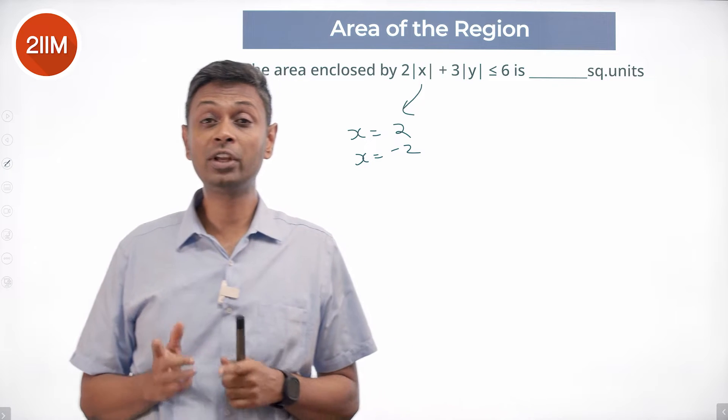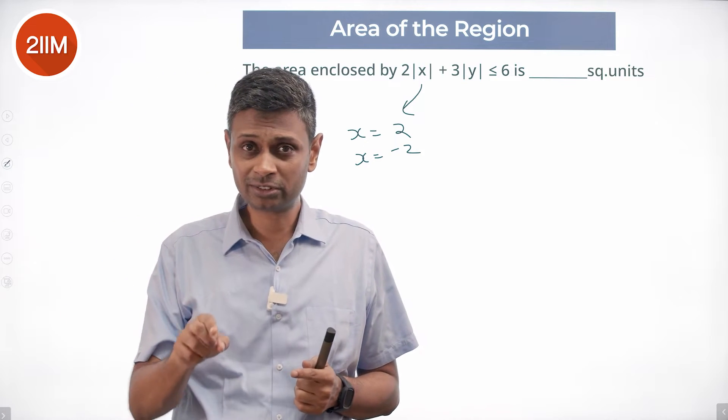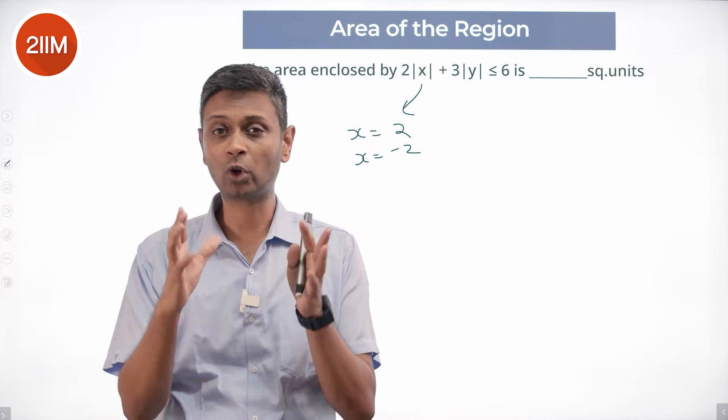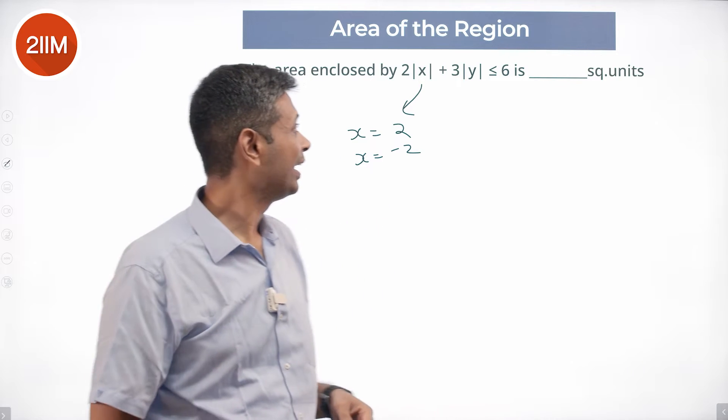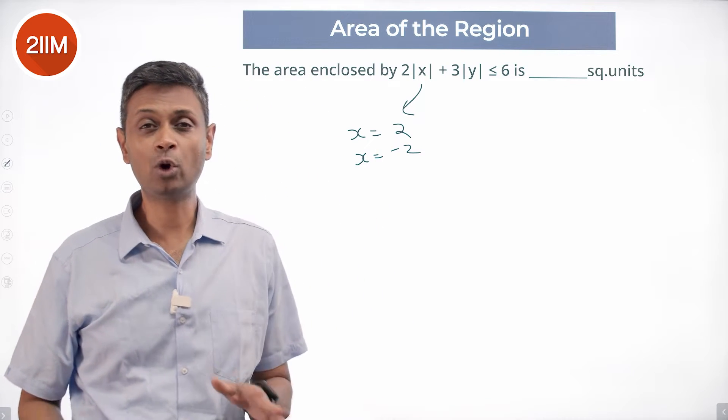If y equals 1.8 works, y equals minus 1.8 will also work. So we say I'm going to forget about negatives, I deal only with positives.